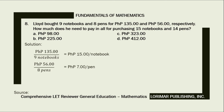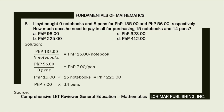Each pen costs 7 pesos. Our problem is how much does Lloyd need to pay in all for purchasing 15 notebooks and 14 pens? All we have to do is multiply 15 notebooks by 15 pesos per notebook and 14 pens by 7 pesos per pen. That is, 15 pesos times 15 notebooks equals 225 pesos; 7 pesos times 14 pens equals 98 pesos.